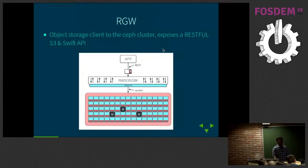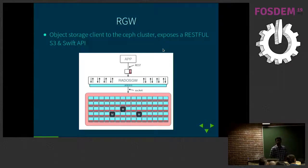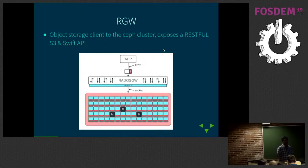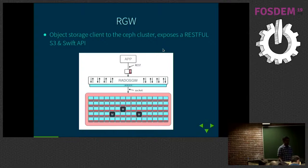I assume everybody here already knows what Ceph is, since this is the storage track and it's pretty much the end of the day. RGW is an object storage gateway to a Ceph cluster, and it exposes a RESTful Swift and S3 API. It basically translates HTTP REST calls into LibRados calls.